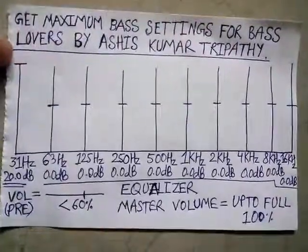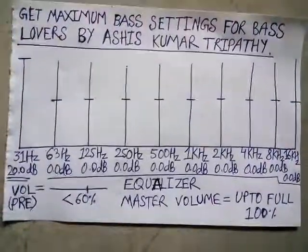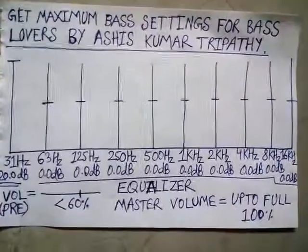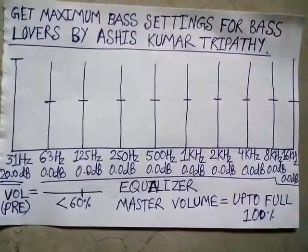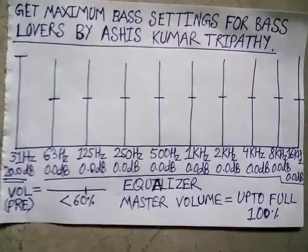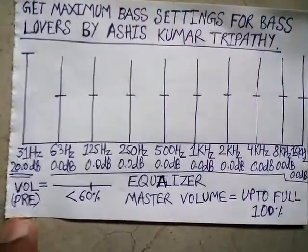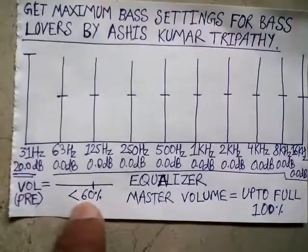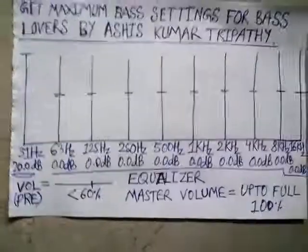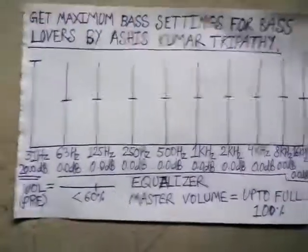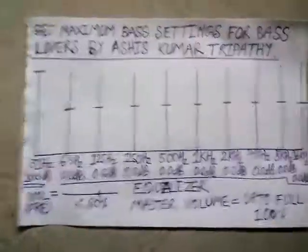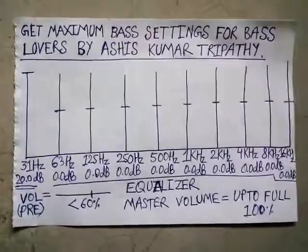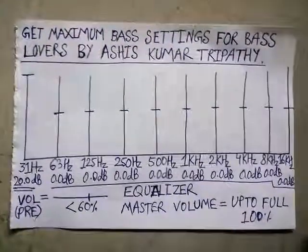That means to full level, that is up to 20dB, and let the rest remain as it is. Then we have to set the volume to less than 60% of the equalizer volume, and after that increase the maximum master volume up to our requirement.